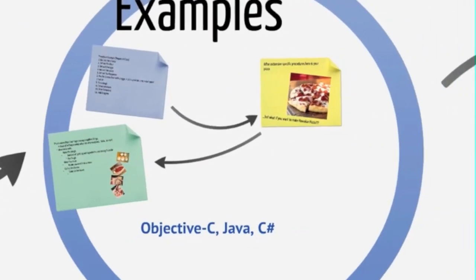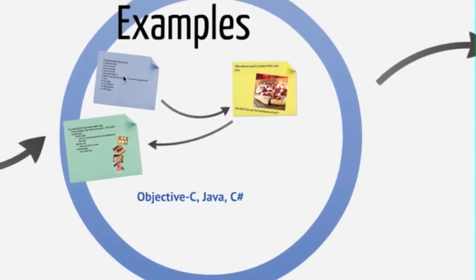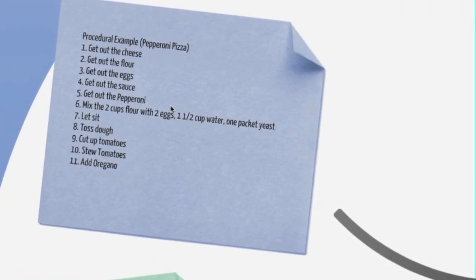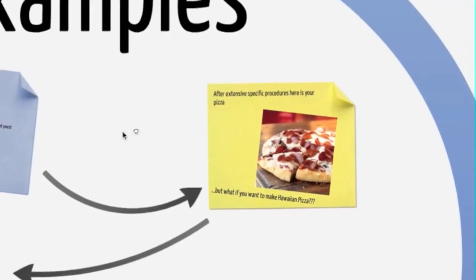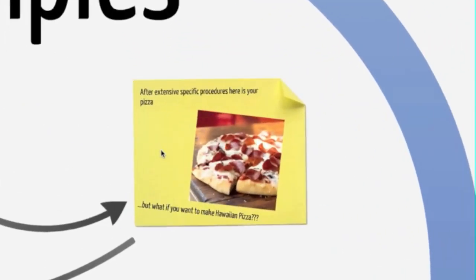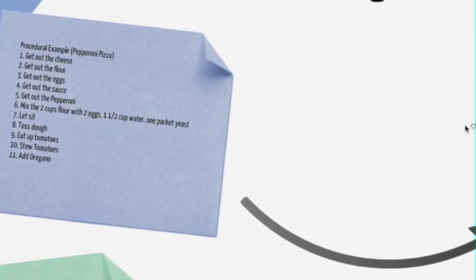I want to show you what I'm talking about in the next screen. Here's a procedural example for pepperoni pizza: get out the cheese, flour, eggs, sauce, pepperoni, mix two cups flour with two eggs, one and a half cup water, yeast, let sit, toss dough, cut up tomatoes, add oregano - you've got this big long list. But what if you want to make Hawaiian pizza? You didn't leave room to add other toppings. In procedural, you have to make a whole other list.